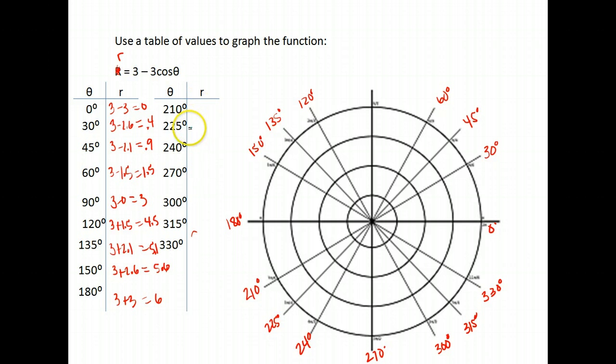And we could continue here, the cosine of 210 is negative 0.86 times negative 3 is 2.6 so again we get 3 plus 2.6 or 5.6 and our values really are going to repeat in that quadrant. So the cosine of 225 is negative 0.7 times negative 3 is 2.1, again we get 3 plus 2.1 which is 5.1, we keep going we get 3 plus 1.5 which is 4.5 for our next one. At 270 the cosine of 270 is 0 so we get 3 minus 0 which is 3, and again we're going to end up with some repeating values here.